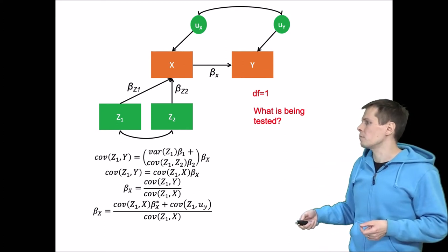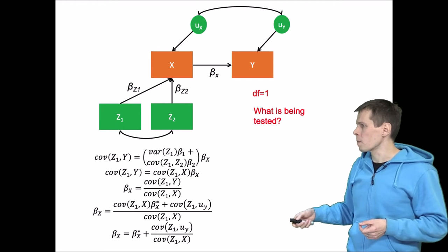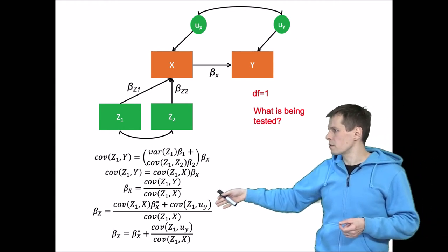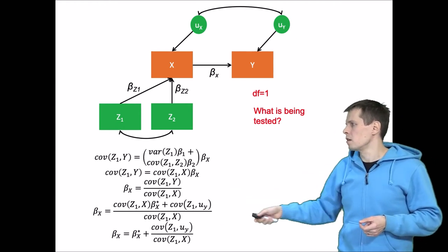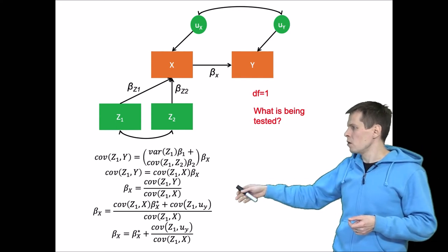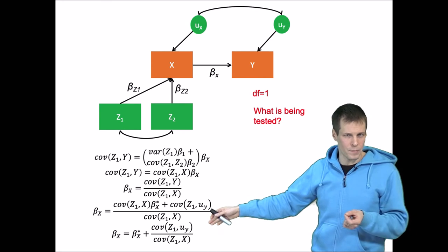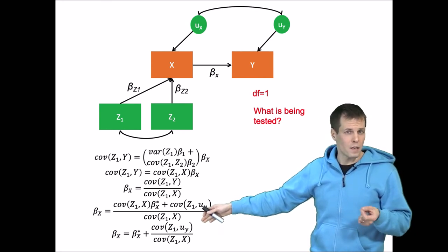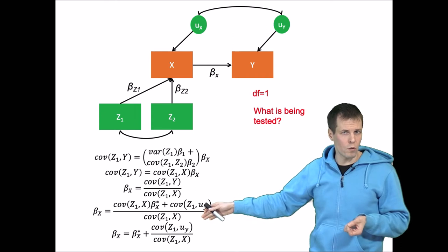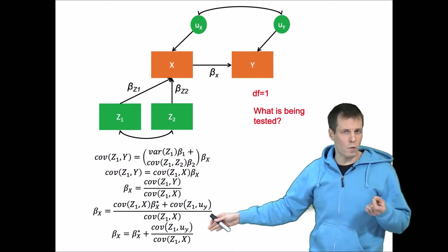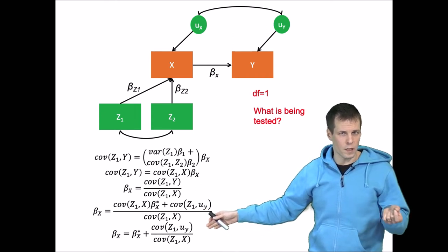Let's proceed with this equation a bit more. We can simplify it. So it's beta star plus ratio of covariance Z1 with error term and covariance Z1 with x. So the first covariance quantifies if the exclusion criterion holds, and the second covariance quantifies the strength of this instrument.